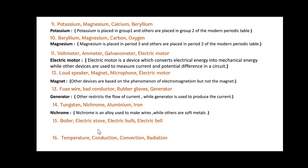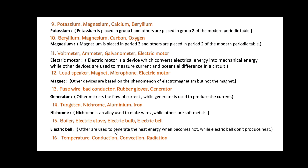Next: Boiler, Electric Stove, Electric Bulb and Electric Bell. Friends, here Electric Bell is the odd one out. Since others — Boiler, Electric Stove and Electric Bulb — are used to generate heat energy, while Electric Bell does not produce heat.